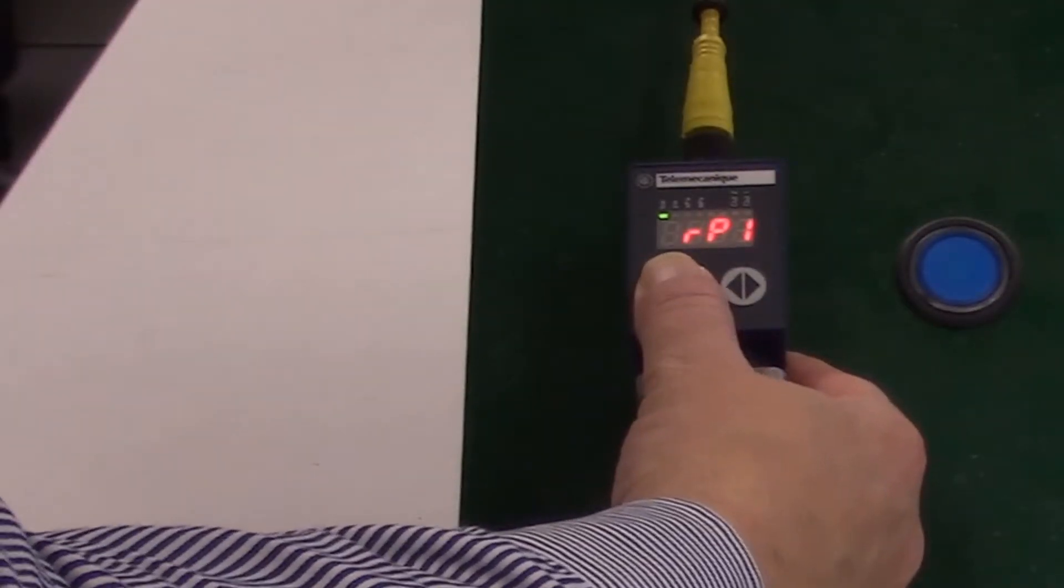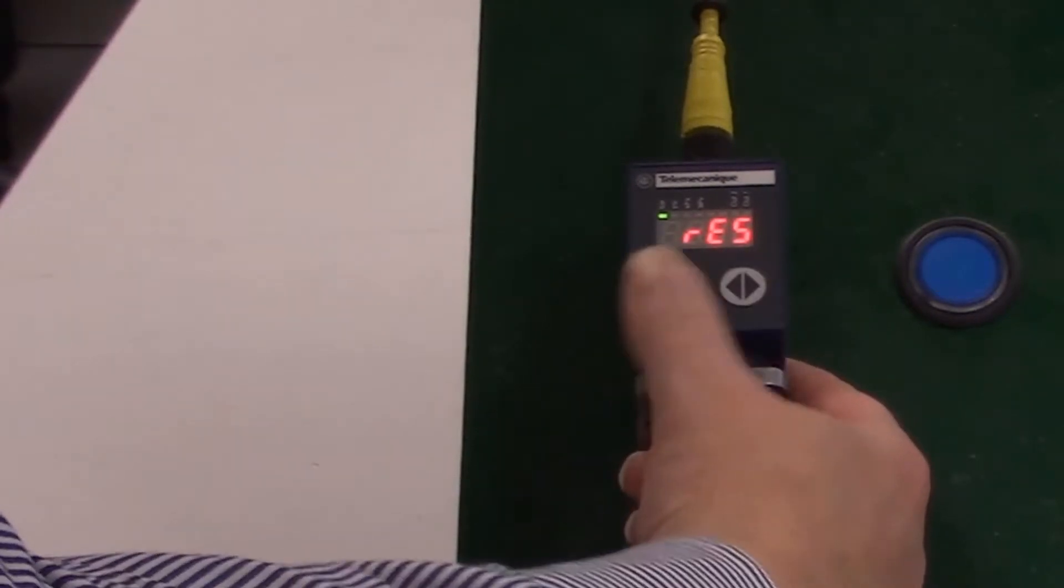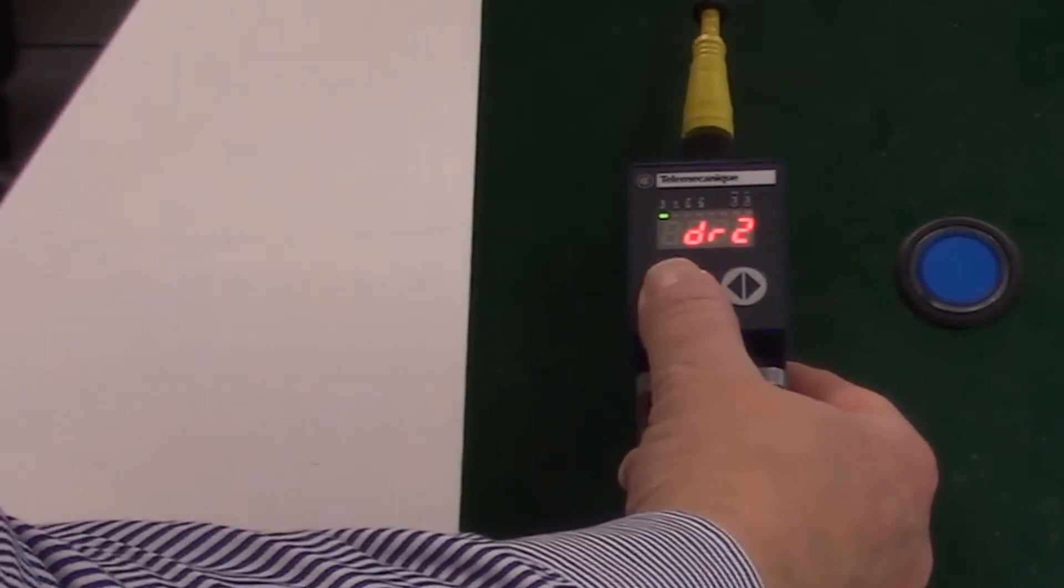Press the up down button to cycle to the EF Extended Functions menu, select with the left right, then press the up down button to cycle to count 1.